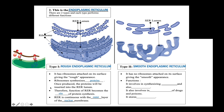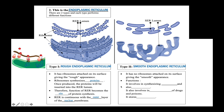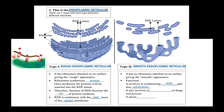If the rough endoplasmic reticulum acts as the site of protein synthesis, the smooth endoplasmic reticulum is involved in the production of lipids and carbohydrates. It also involves in the process of detoxification of drugs and poisons. In some cells, it is also responsible for storing calcium.